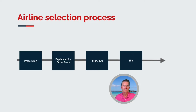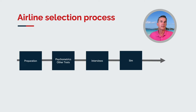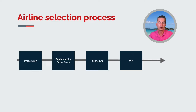The airline selection process is a chain. There are multiple links, and each big link has sub-links. You need to be good or better at each link in order to pass. If you're weak at one, your excellence in another link will not compensate. You need to be good or better everywhere. There are four steps: preparation, psychometrics and other tests, interviews, and finally the SIM. Most airlines run the SIM at the end because it costs money — if they've eliminated pilots before, they won't have to spend on the SIM.